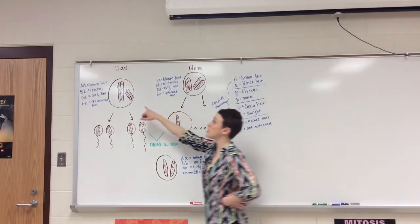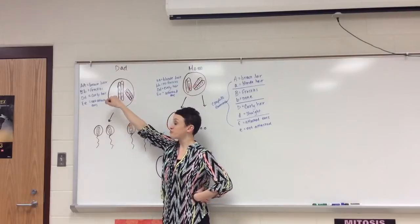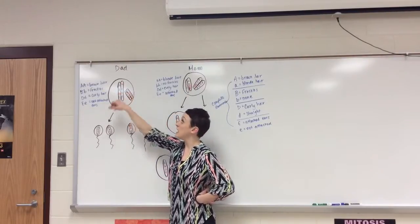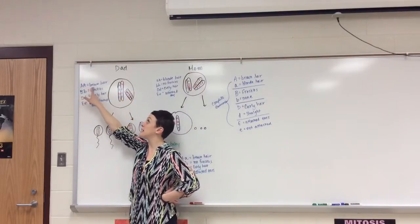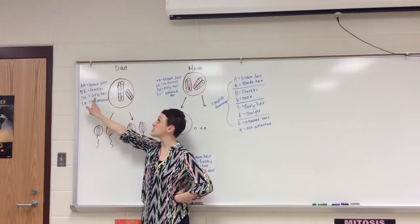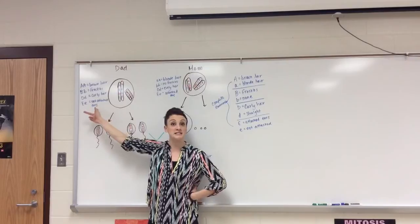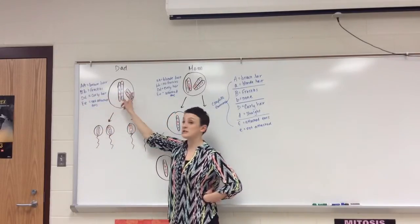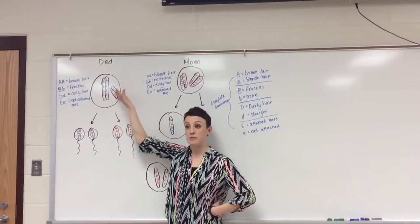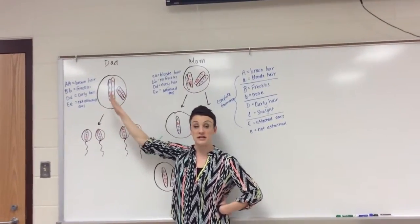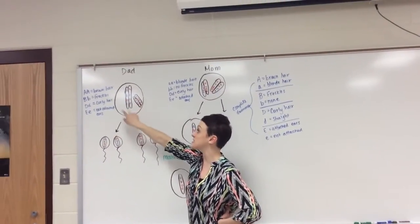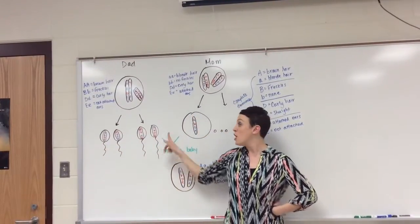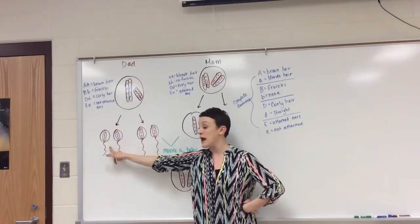I started over here with dad's homologous chromosomes from mom and dad. I was able to determine that dad had brown hair, freckles, curly hair, and his ears were not attached. After crossing over — that's how I got the blue and the red, remember when that happens to create diversity — we split the homologous and split the pairs and they each end up in different sperm. Four genetically different haploid sperm.